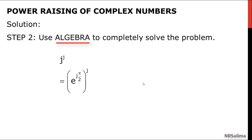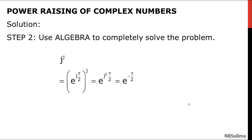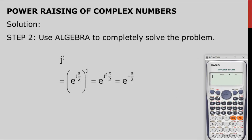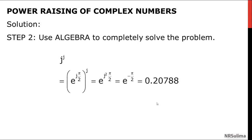Step 2: use algebra to completely solve the problem. On the right side of the equation, we have exponential j-squared pi halves. Since j-squared equals negative 1, the final answer is exponential negative pi halves. Using the calculator to evaluate exponential negative pi halves gives 0.20788, so the final answer is 0.20788.